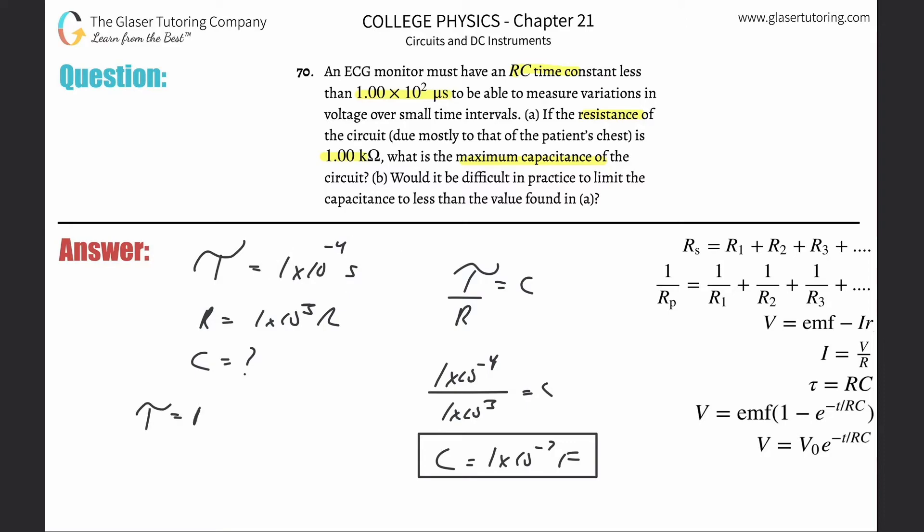t is equal to rc. If the time constant has to be less than this number, just, you know, call it 1 times 10 to the minus 5th now. r is constant. What does that then tell us about the maximum capacitance now?